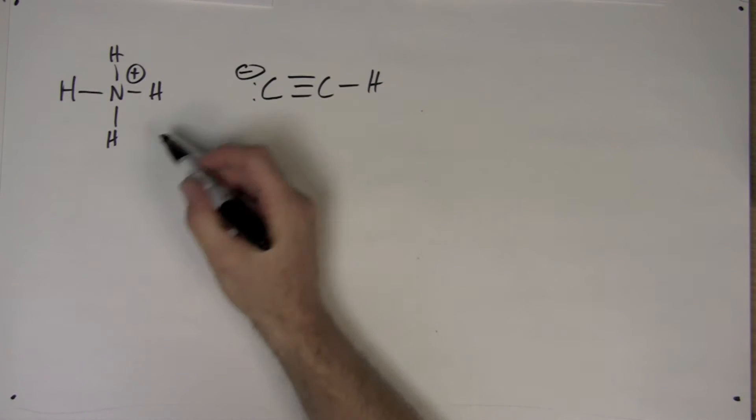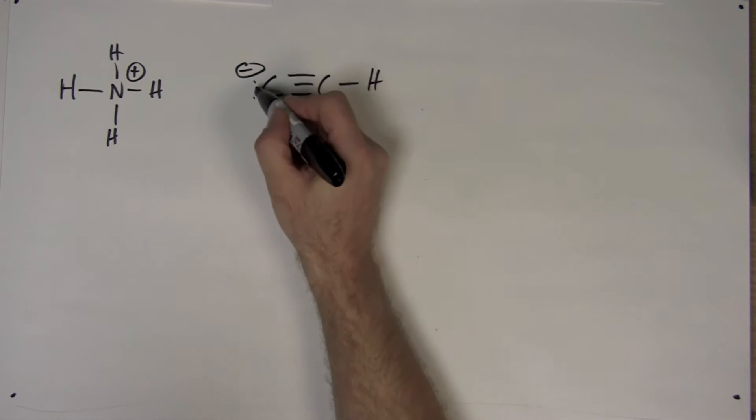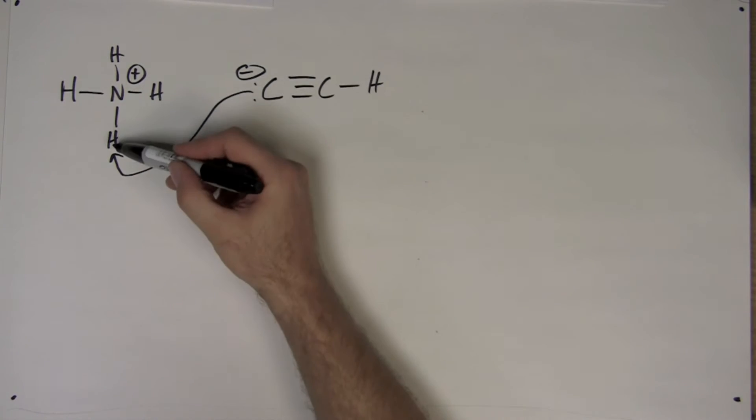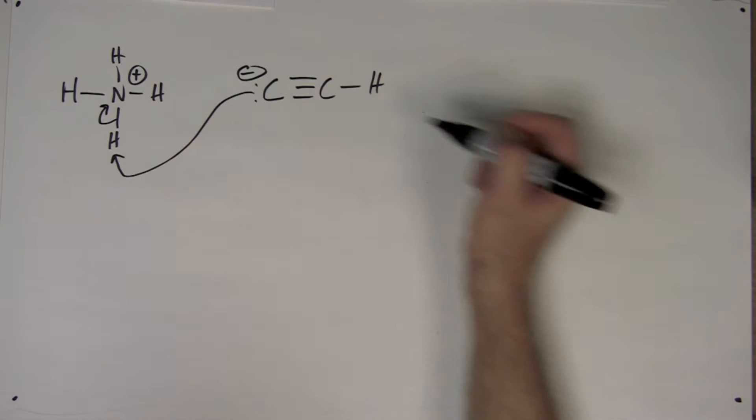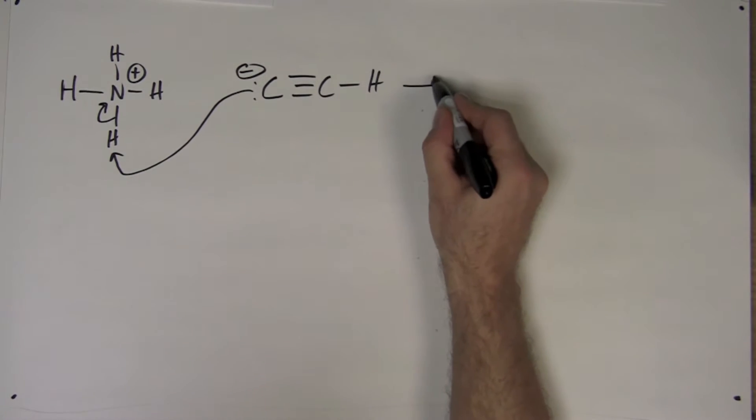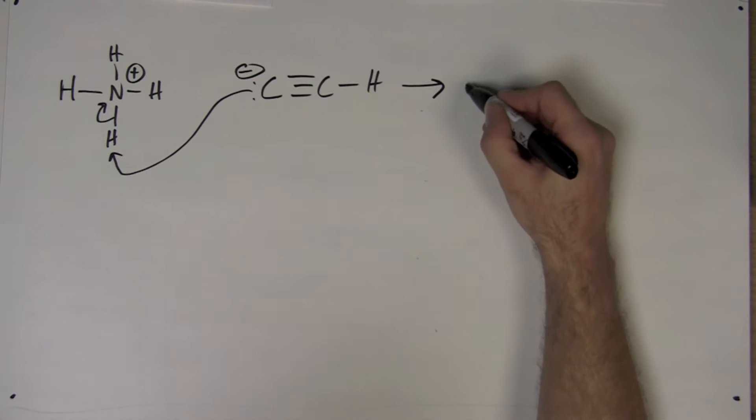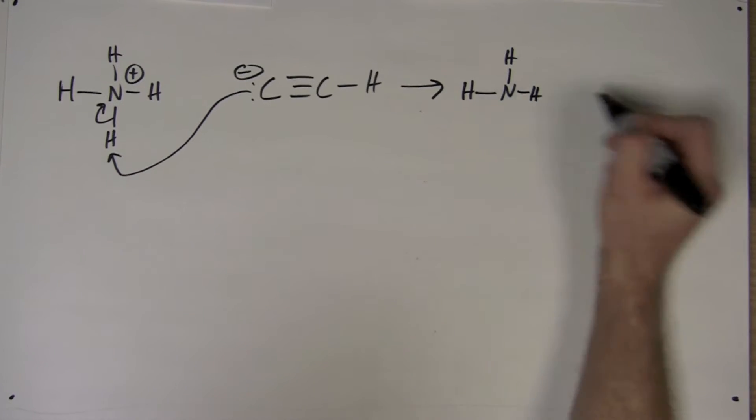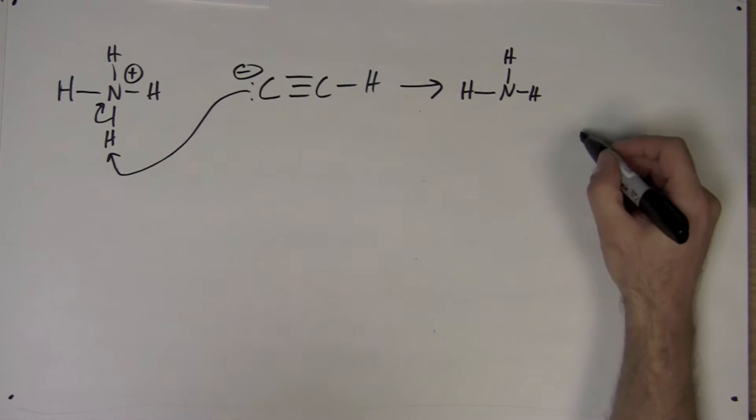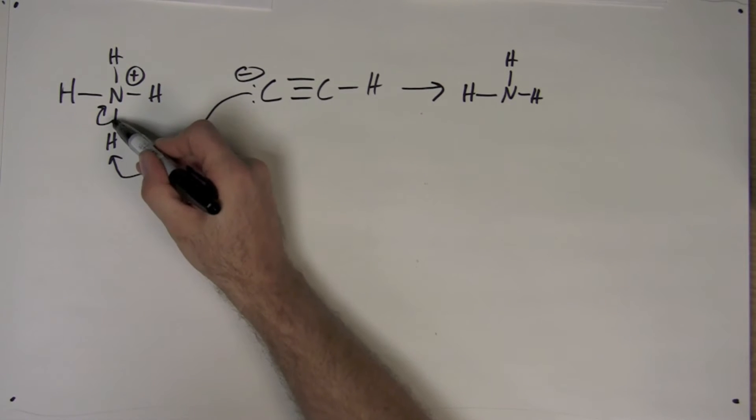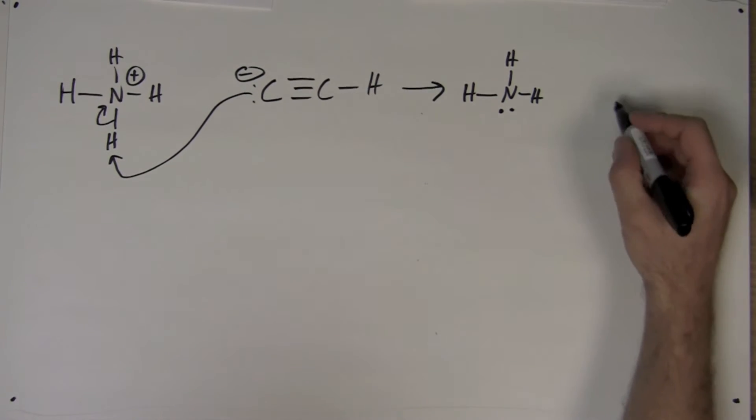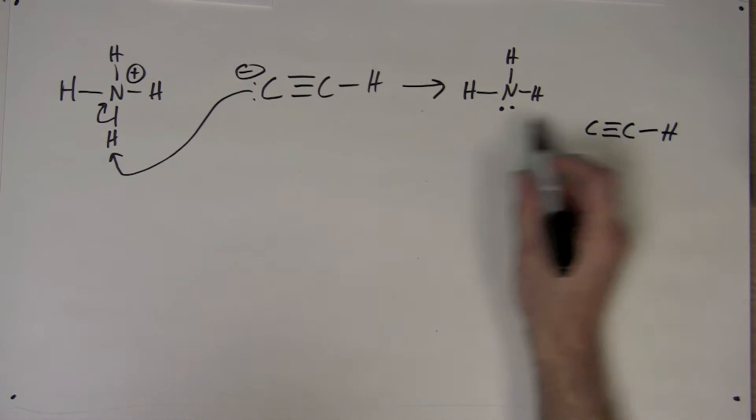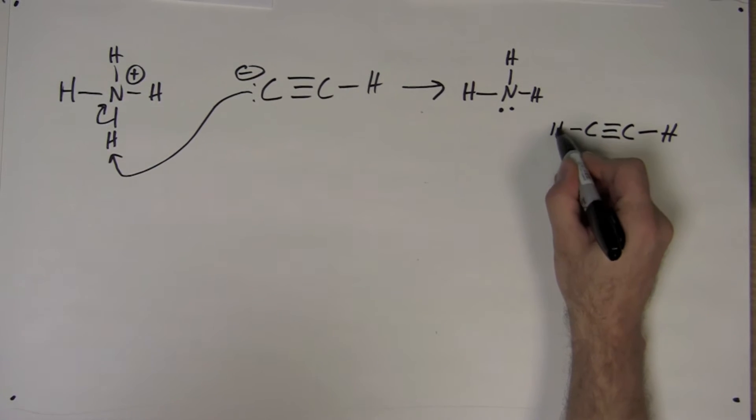The acid and base will react. The base removes a proton from the acid. Electrons go back to the acid, to the nitrogen, giving us the following product. The electrons from this bond are now on the nitrogen atom, and the carbon is now bonded to the hydrogen atom.